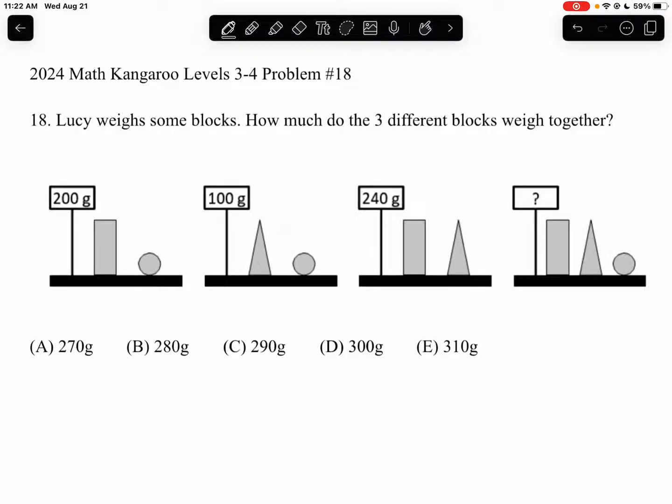This is the problem as it originally appeared on the exam, and now we're going to try to work through the solution together. So, let's first look at our pictures over here. We see in the first image we have one rectangle and one circle, whose combined weight is 200 grams. Then we have one triangle and one circle, which have a combined weight of 100 grams.